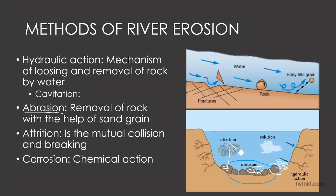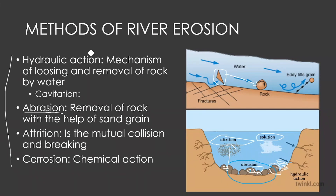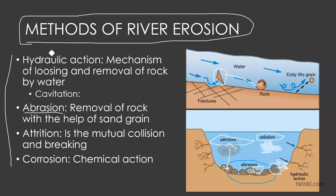In attrition, eroded sediments moving with the water collide with each other and break into smaller fragments. Corrosion, also called solution activity, is the chemical process where minerals in rocks dissolve into the water. Even water that appears clean at home will show dissolved materials when passed through a filter — those dissolved materials are the result of this solution or corrosion process.